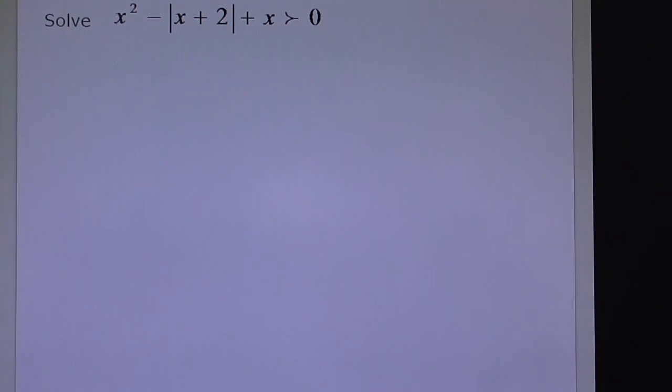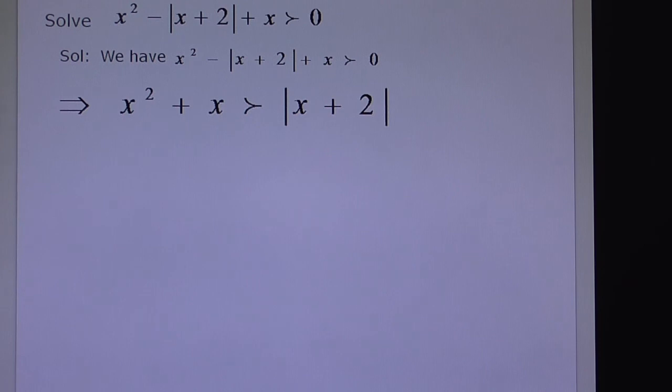Students, this is an IIT JEE Advanced question: x² - |x + 2| + x > 0. We have the equation x² - |x + 2| + x > 0. This can be written as x² + x > |x + 2|.